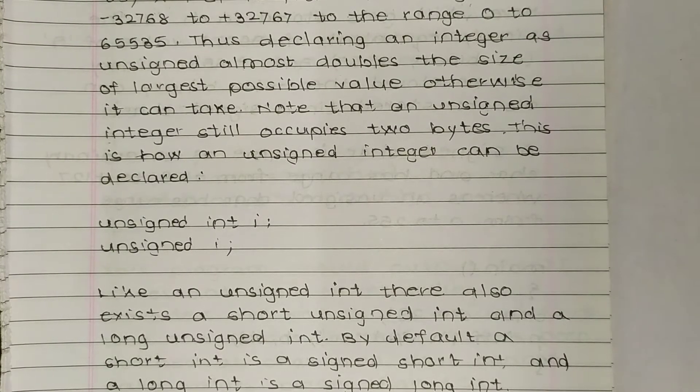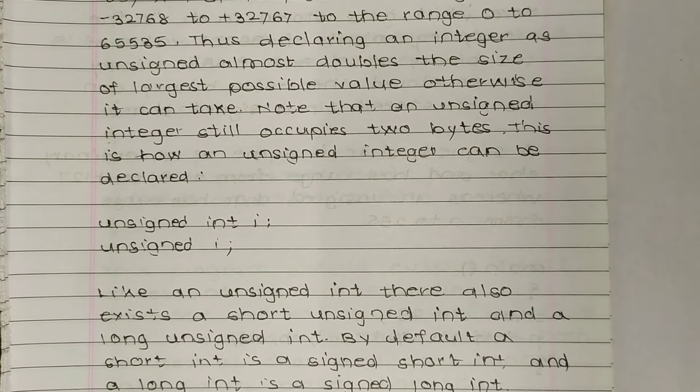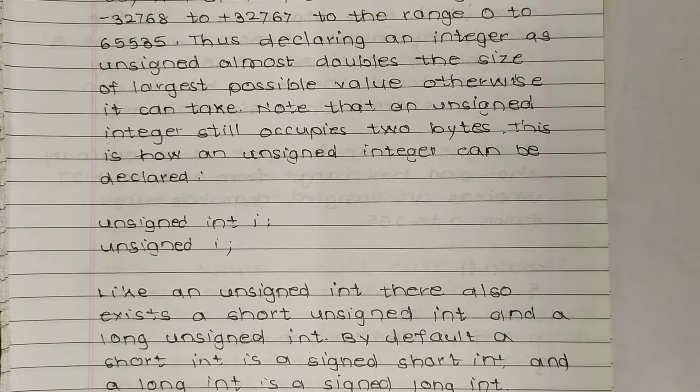Note that an unsigned integer still occupies 2 bytes. This is how an unsigned integer can be declared: unsigned int i. So i is an unsigned integer. And unsigned i.